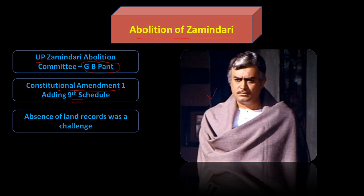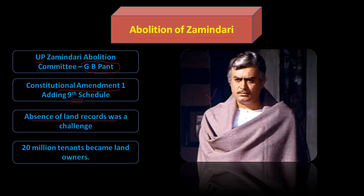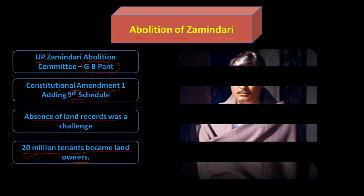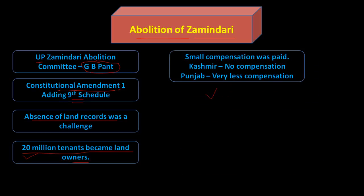A major challenge was the absence of land records. A good outcome of this land reform was that 20 million tenants became land owners — something truly revolutionary. In most countries, a revolution would have been needed for this to happen. The Zamindars paid some compensation, but it was very small.